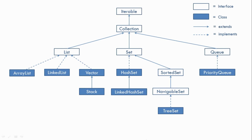You can note down this diagram or take a snapshot for future reference. This does not cover all classes and interfaces, but these are the most commonly used ones. Under the Collections Framework we have three important interfaces: List, Set, and Map.